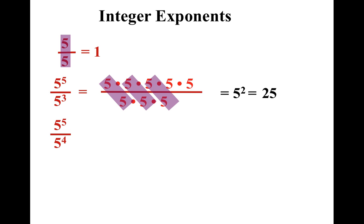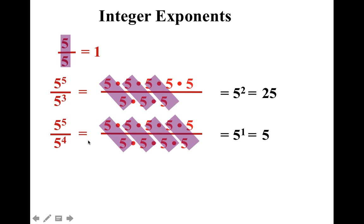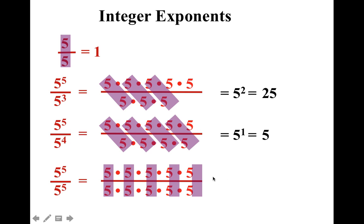Let's take this one step further. What if I had 5 to the 5th over 5 to the 4th? Now there are four 5s in the numerator and denominator that would simplify, and there is one 5 left over in the numerator. And 5 minus 4 is 1. Now if we take it one step further and add another 5 to the denominator, now we have all 5s in the numerator and denominator, and everything simplifies. So that means I have no 5s left over, and everything simplified to 1 — same numerator, same denominator equals 1. And 5 minus 5 is 0, and that's why any zero exponent always equals 1.